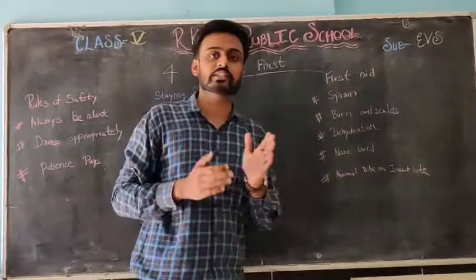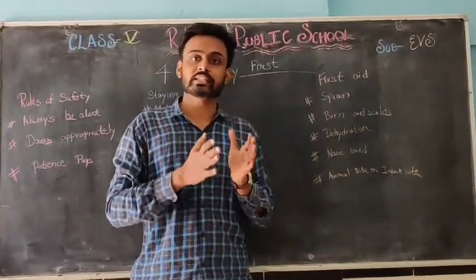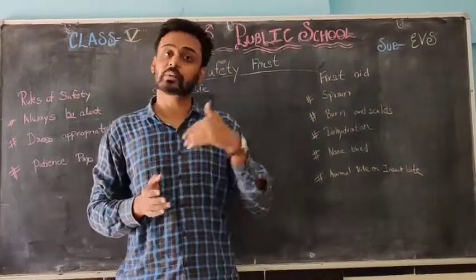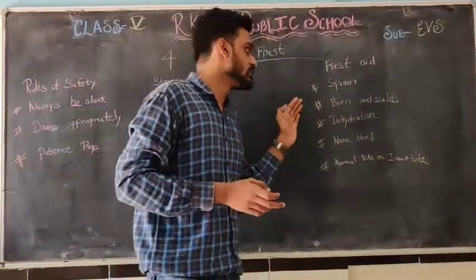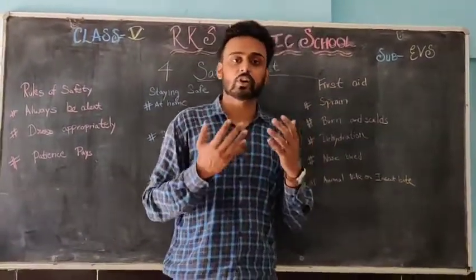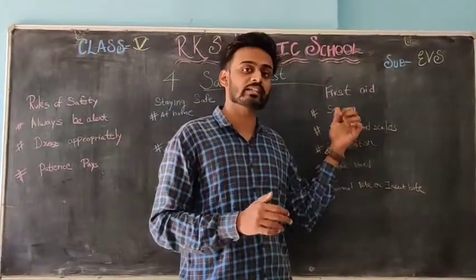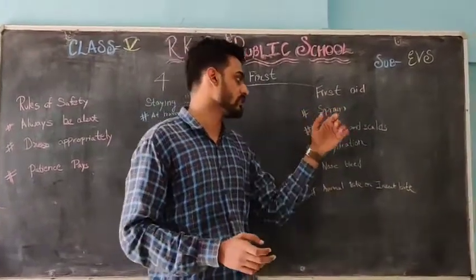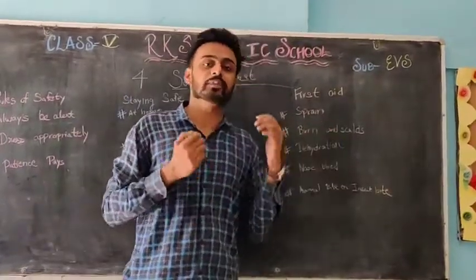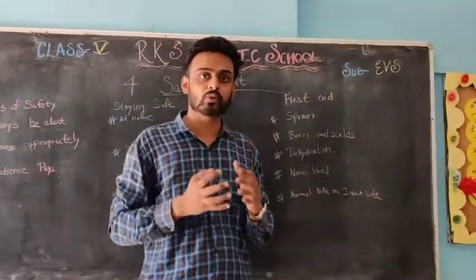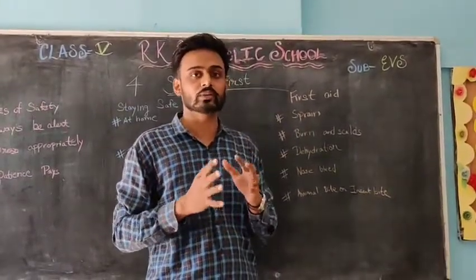The next topic is first aid. Sometimes we try to be careful, but mishappenings happen despite being careful. For a sprain, when we twist a joint, it becomes painful and swollen. We can use ice packs for comfort. Next is burns. At times we can get burned, so we should pour cold water over it or use an antiseptic to soothe the pain.